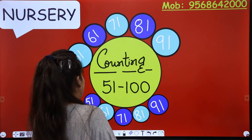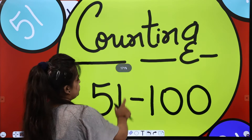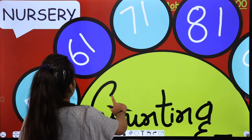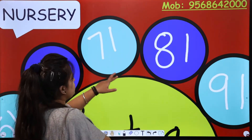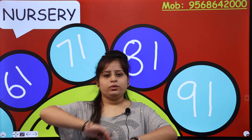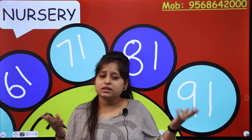Now let's see what is on the board — counting 51 to 100. What are these numbers? 51, 61, 71, 81, 91. These are the numbers with which you have to start the count. Counting 51 to 100, so you have to start with 51.